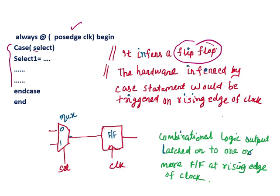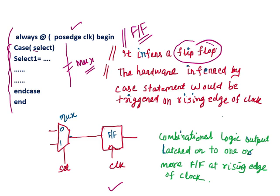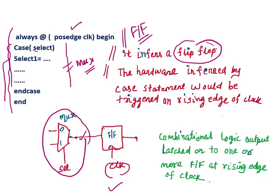If you have written the whole code, then how is it inferred? It is converted into this hardware. The hardware inferred via case statement would be triggered on the rising edge of clock. So on every rising edge of clock, the output of the multiplexer will be assigned to the output of the flip-flop. Here the combinational logic output is latched on to one or more flip-flops at the rising edge of clock. So when a positive edge of clock comes, this MUX, this combinational part, is triggered. This is the logic, and this is the hardware for this logic.